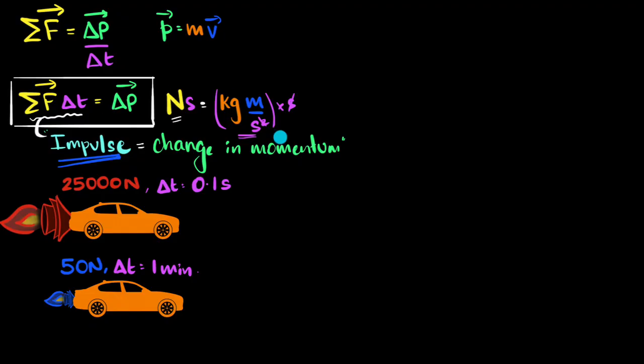Whichever has the bigger product will end up having a bigger change in momentum and therefore a bigger final velocity. So which one has a higher impulse? For the first one, the symbol we use for impulse is J. What is impulse here? It's force multiplied by the time over which that force acts. So 25,000 newtons multiplied by 0.1 equals 2,500 newton-seconds. That's the impulse here. And impulse is a vector quantity, which means its direction is important. Since the force is to the right, the impulse will also be to the right direction, meaning its momentum will change towards the right.